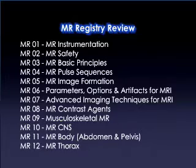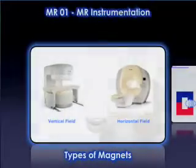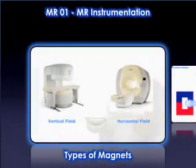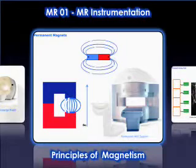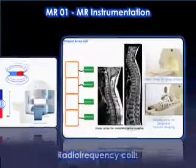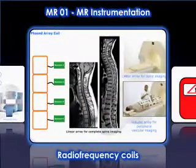This MR Registry Review consists of 12 modules ranging in length from 60 to 90 minutes. The first part of the series provides an overview of the principles of magnetism, the different types of magnetic fields, the effects of various magnetic fields, and the usage of RF coils in clinical MR.